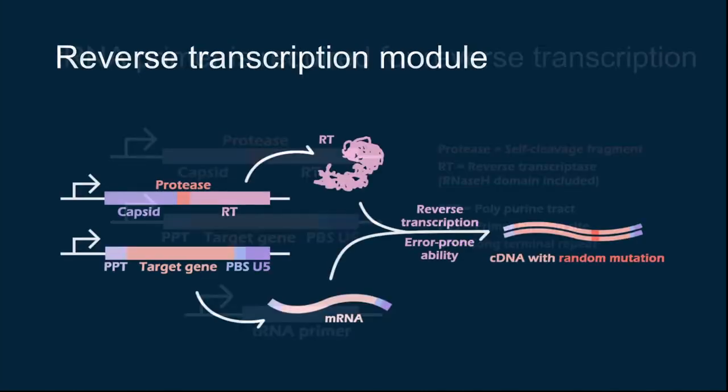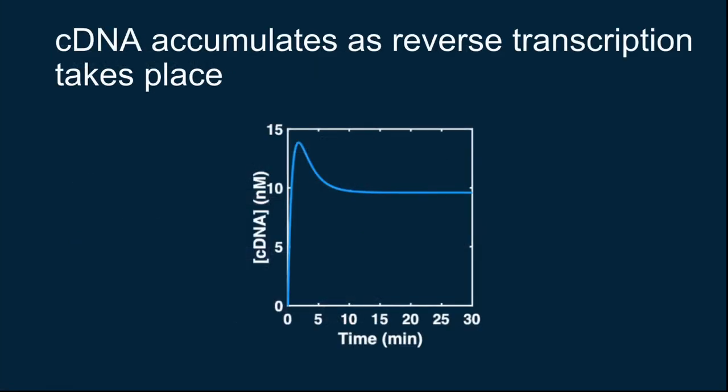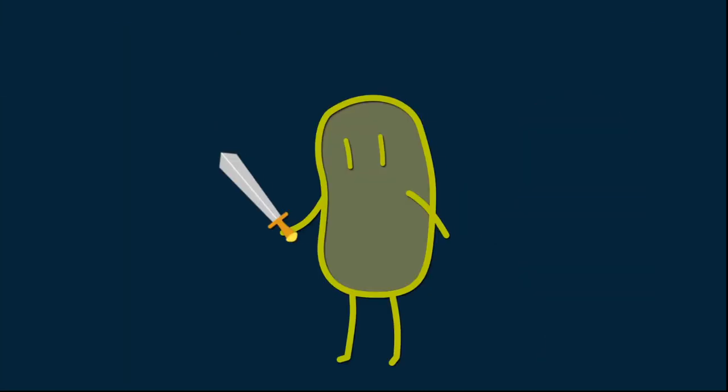So, here is the diagram showing the reverse transcription process. Functioning together, these parts will make up our reverse transcription module and bring mutations to the target sequence. We simulated the reverse transcription process in modeling, and we can see that the cDNA will be produced and quickly reach its steady-state concentration within the presence of RT. Now, the E. coli has equipped itself with the sharpened sword. All it needed now is the solid shield.